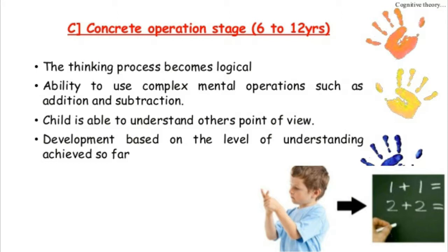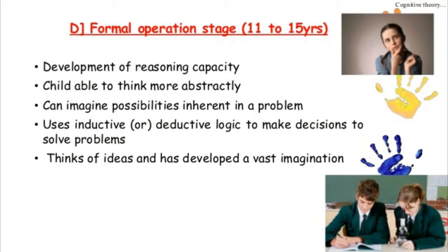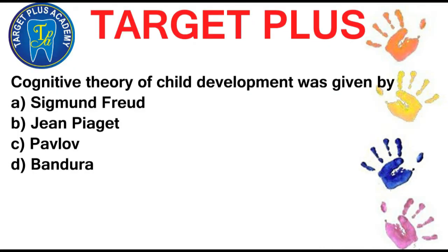Next is the formal operations stage, which dwells at 11 to 15 years. There is development of reasoning capacity. The child is able to think more abstractly, can imagine possibilities, thinks of ideas, and has developed vast imagination. Cognitive theory of child development was given by Jean Piaget.